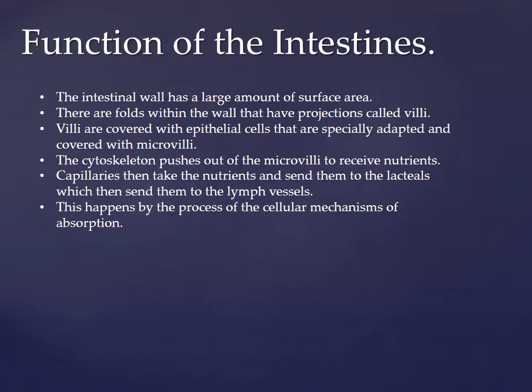The intestines rely heavily on surface area. The intestinal wall has a very large amount of surface area — there are folds within the wall that have projections called villi, and the villi are covered with epithelial cells that are specially adapted and covered with microvilli. The cytoskeleton pushes out of the microvilli to receive nutrients coming through the intestines. Capillaries then take the nutrients and send them to lacteals, which then get sent to the lymph vessels — lacteals are just specialized lymph capillaries.